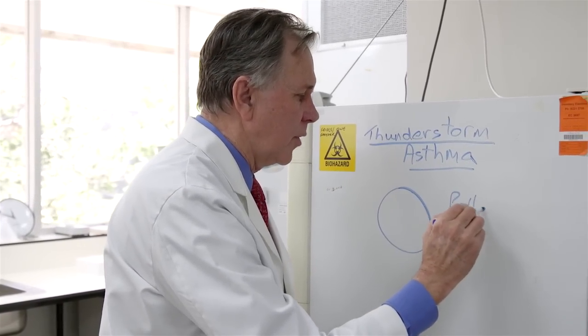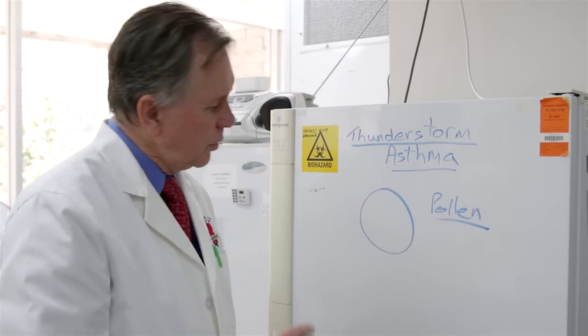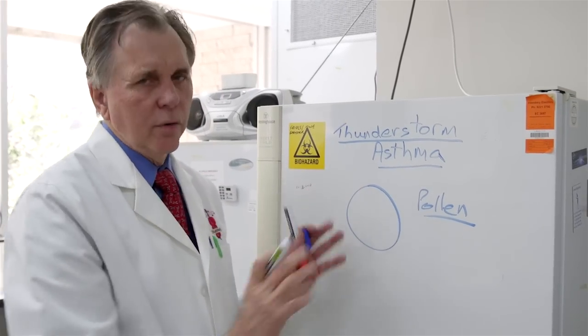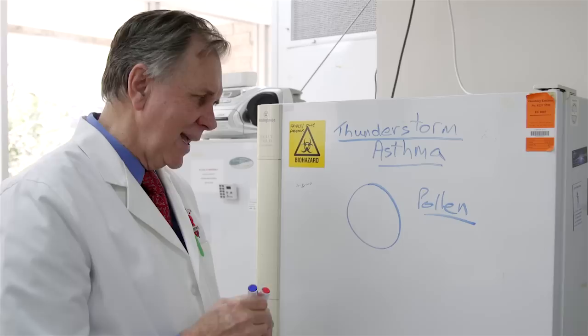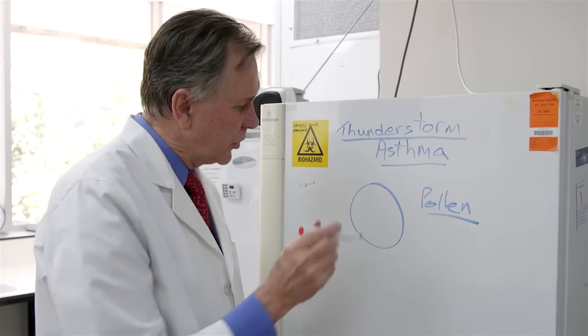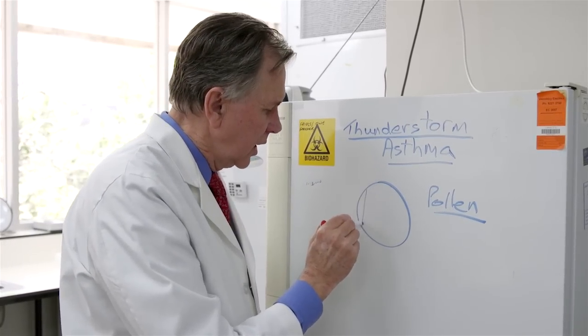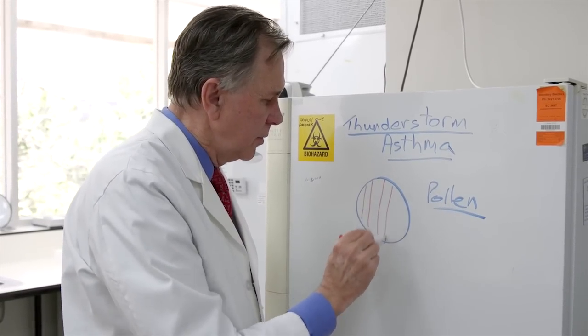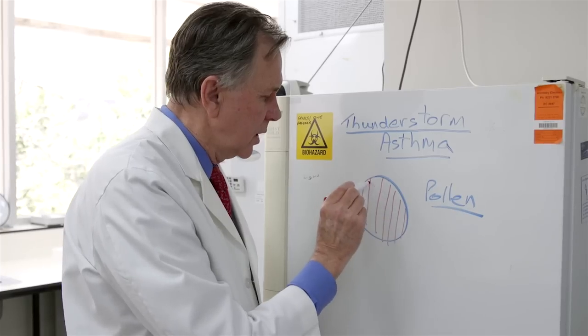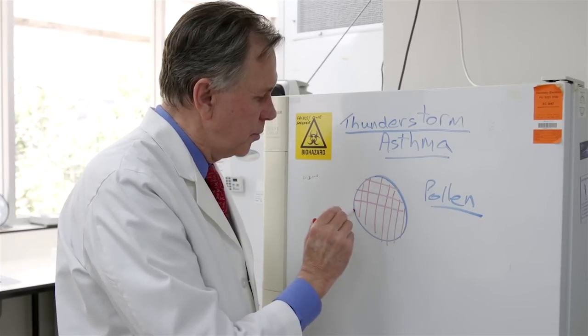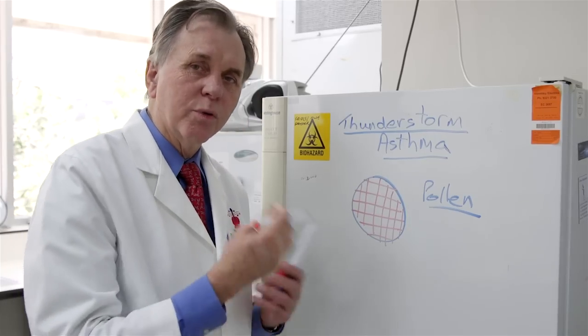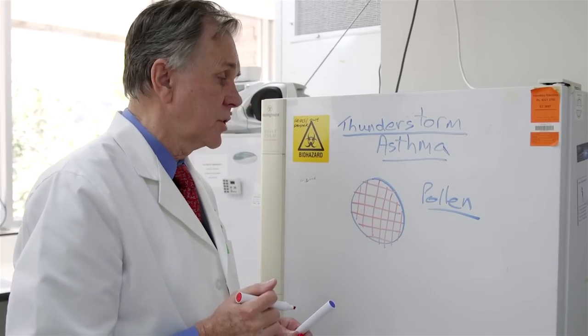So here's a diagram of a pollen granule, and everyone thinks, well okay that's a pollen granule. But it's very interesting—it actually has a structure inside it, so that inside your pollen granule you might have five, six, or seven hundred little tiny sub-components of the pollen, which is some kind of a starch but with proteins in it that you can become allergic to.